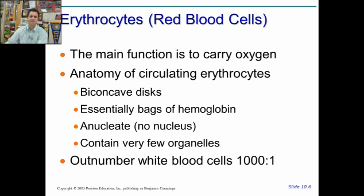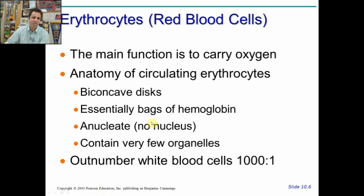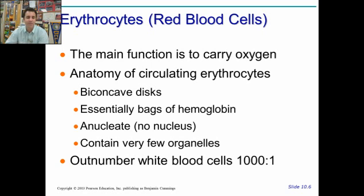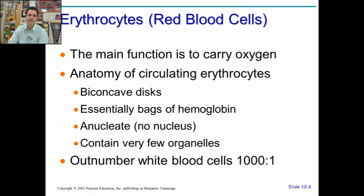Let's focus on red blood cells. Their main function is to carry oxygen. They use hemoglobin — these are essentially giant bags of hemoglobin. They're biconcave discs and they are without a nucleus. They're also without a lot of organelles, because they're basically just carrying sacks of oxygen. They outnumber white blood cells quite significantly.